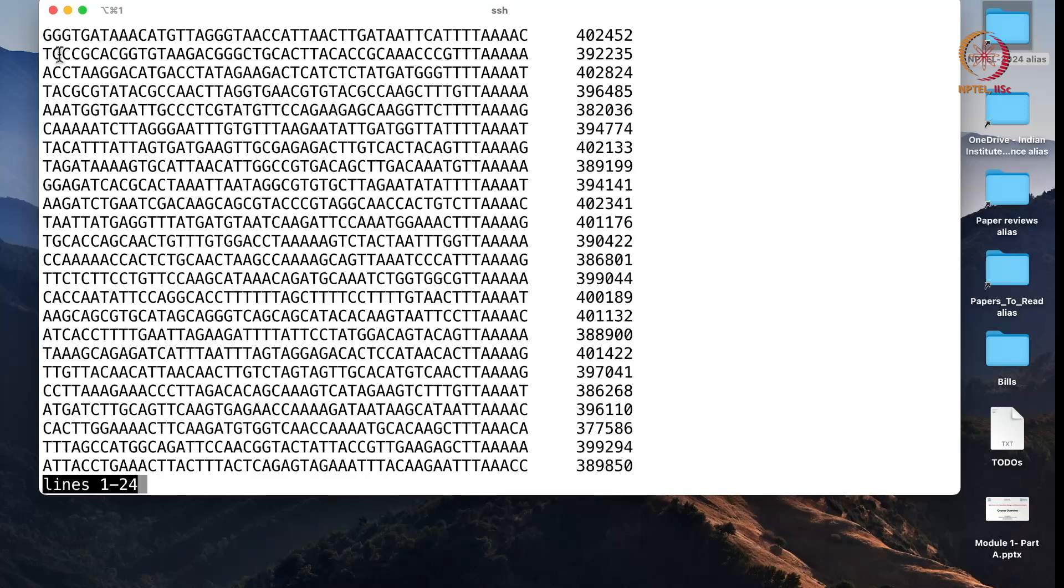And what you see is immediately it gives me all words of length 51 that occur 300,000 times or more. For example, this word GGTGAGTA occurs 452,452 times, similarly the next word occurs 392,235 times.